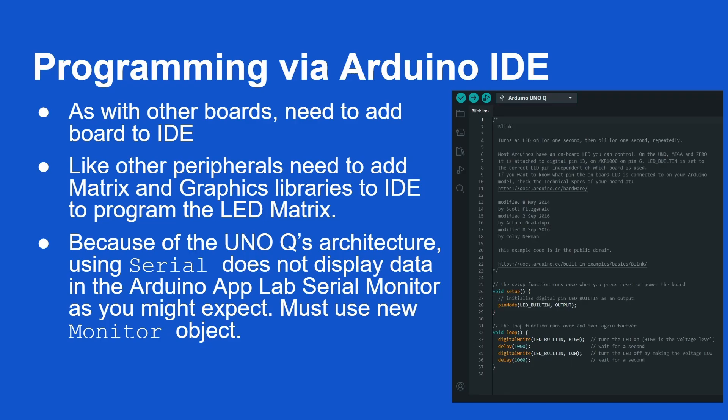However, there are two big differences. The first one is because of the unique architecture of the Uno Q: you can't just use the serial object like you used to before to display data on the serial monitor. You have to use a new object called the monitor object, and I'll talk more about my experience with that a little bit later in the video.